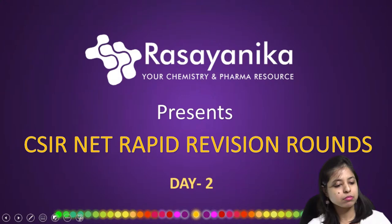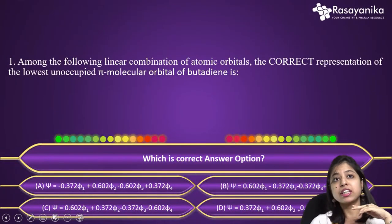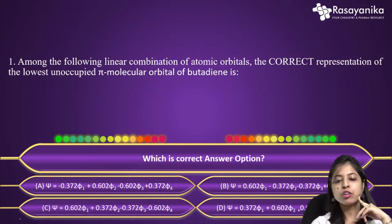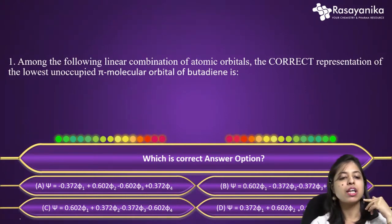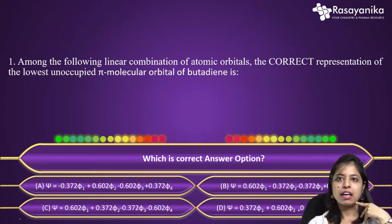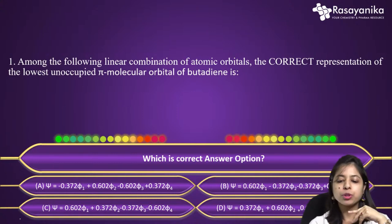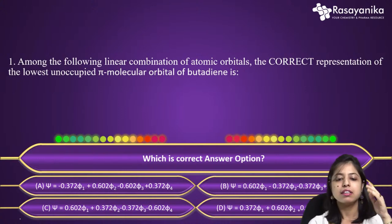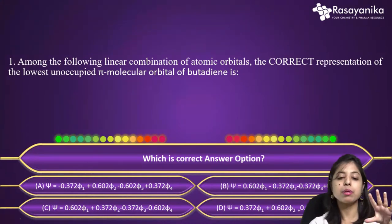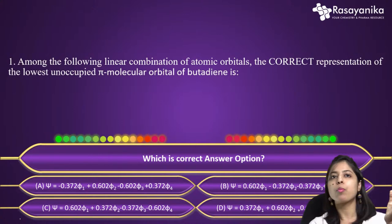Question number one: among the following linear combinations of atomic orbitals, which is the correct representation of the lowest unoccupied pi molecular orbital of butadiene? There are four wave functions given in the options. This question is basically coming from your quantum chemistry — specifically from Hückel molecular orbital theory, HMO.